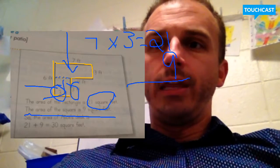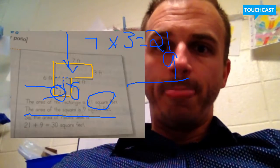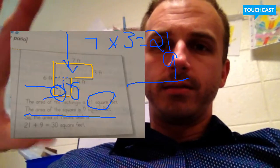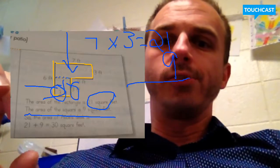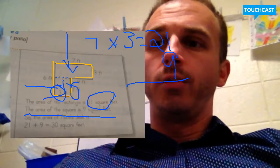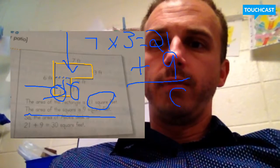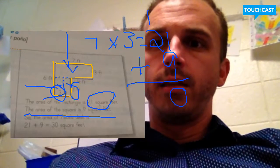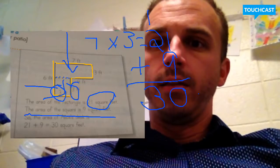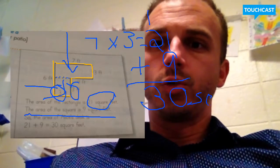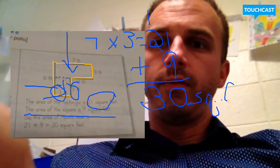So now I have the area of the rectangle is 21. The area of the square that's right attached to that rectangle is 9. And so all I do is add those two numbers, and it's going to give me 30 square feet.